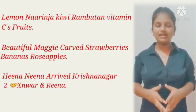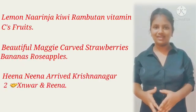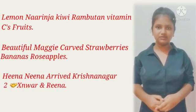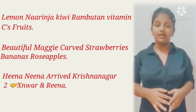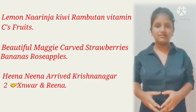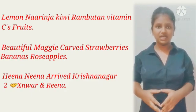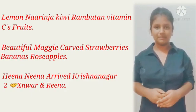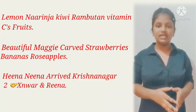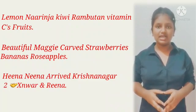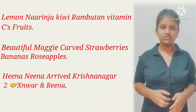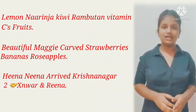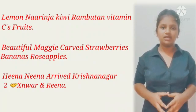Let's once again recall these formulas. Repeat with me: Lemon, Naringa, Kiwi, Rambutan, Vitamin C, Fruits. Beautiful Maggi, Card, Strawberries, Bananas, Rose Apples. Heena, Neena arrived at Krishnanagar to meet Genwar and Rina.